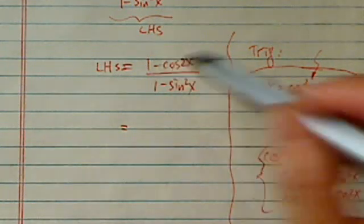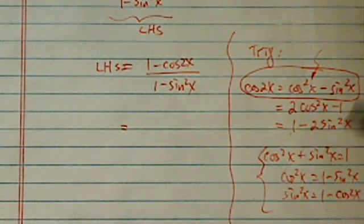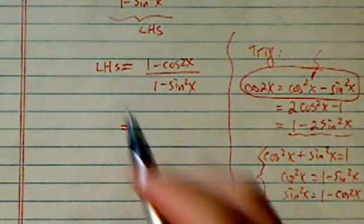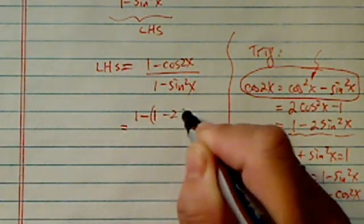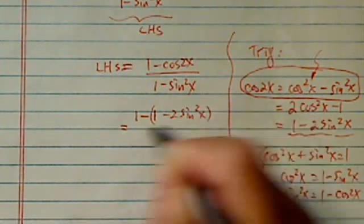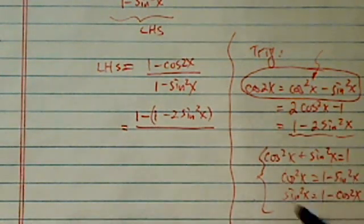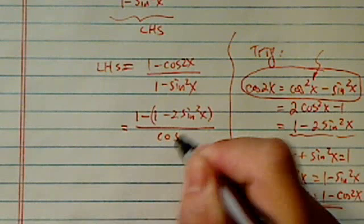So obviously we have 1 minus, I want to get the 1 canceled, so the best thing to do is this one. So I have 1 minus 1 minus 2 sine square of x. And the bottom, using the identity over here, we have cosine square x.